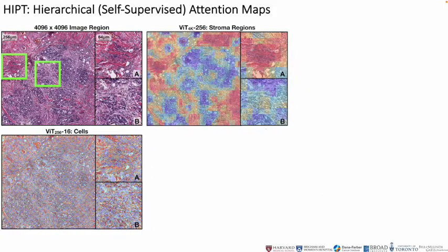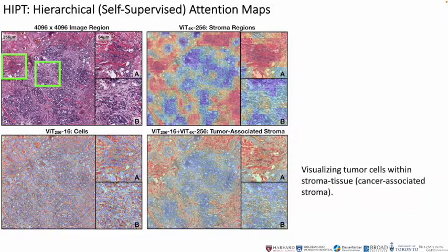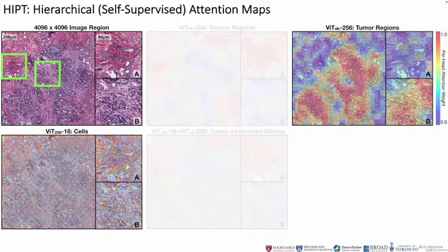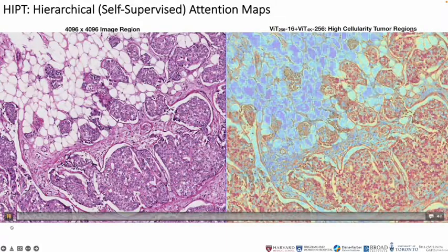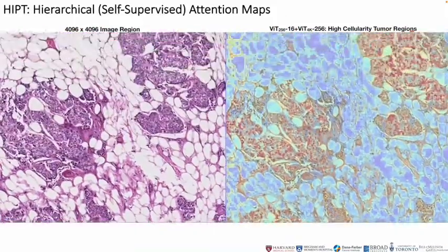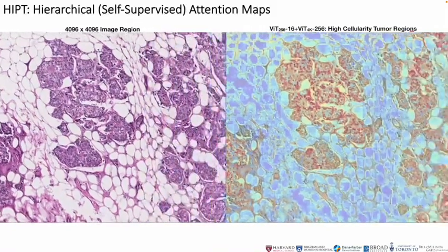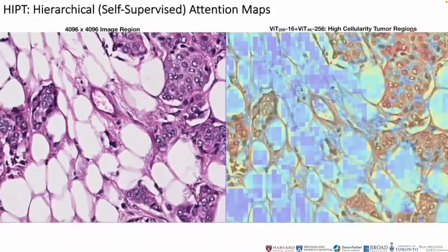Here we show that we can factorize the attention distributions to visualize coarse-to-fine-grained features. Using the attention heads in the patch and region-level ViTs, which isolate cells and stroma regions respectively, factorizing their distributions together is able to detect tumor-associated stroma. With a different attention head in the region-level ViT, we can also detect high-cellularity tumor regions. This is a detailed look at the hierarchical self-supervised attention heat maps from HIPT, which uses the previous attention heads for finding high-cellularity regions. Without any supervision, HIPT is able to saliently localize tumor cells within tumor-containing regions, which corroborates the learned inductive biases of pathology imaging data by our method.